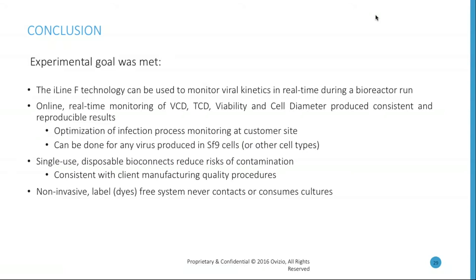There is online real-time monitoring of viable cell density, total cell density, viability, and cell diameter, producing consistent and reproducible results. An optimization was done for the infection process monitoring at the customer site, but we can do this basically for any virus produced in SF9 cells and even in other cell types.